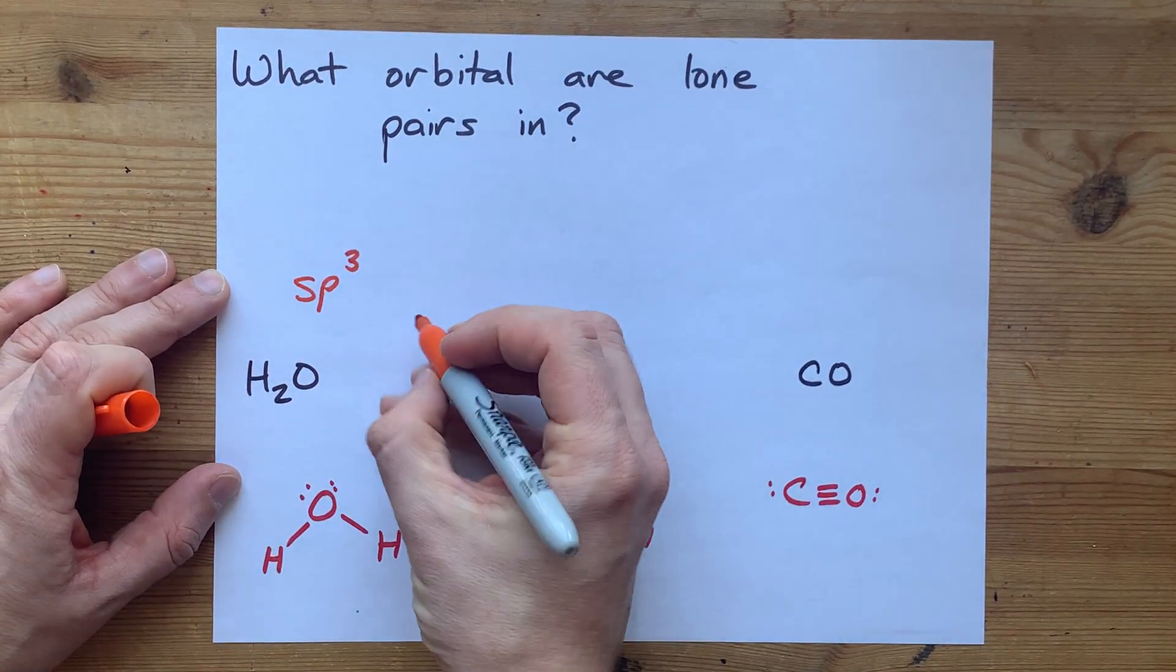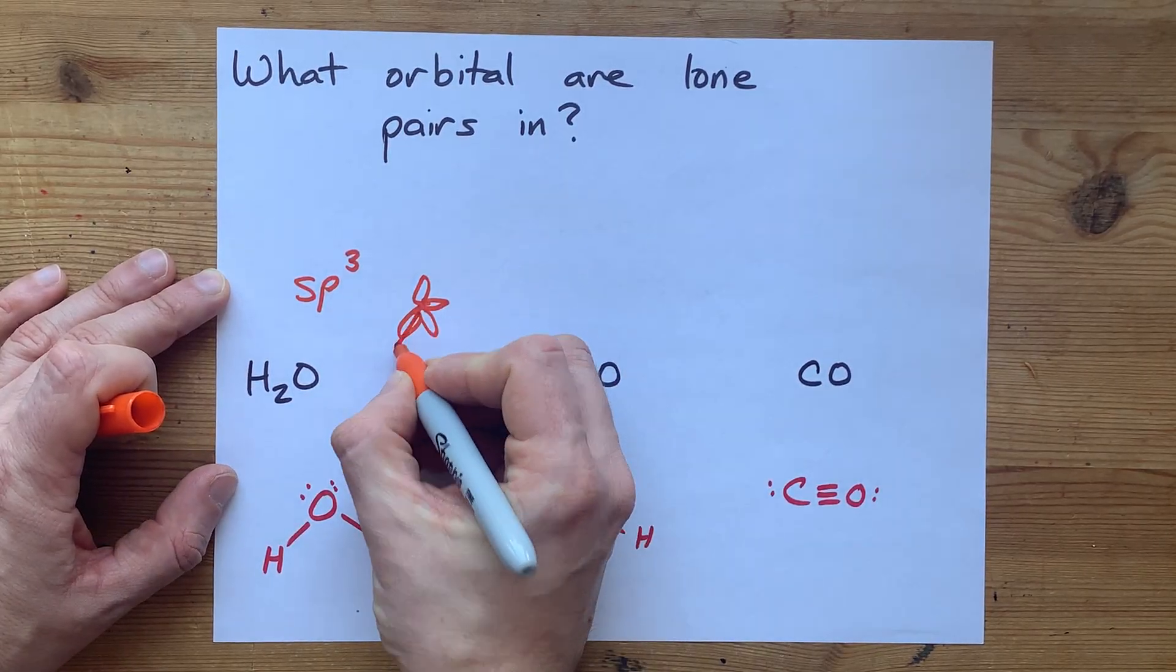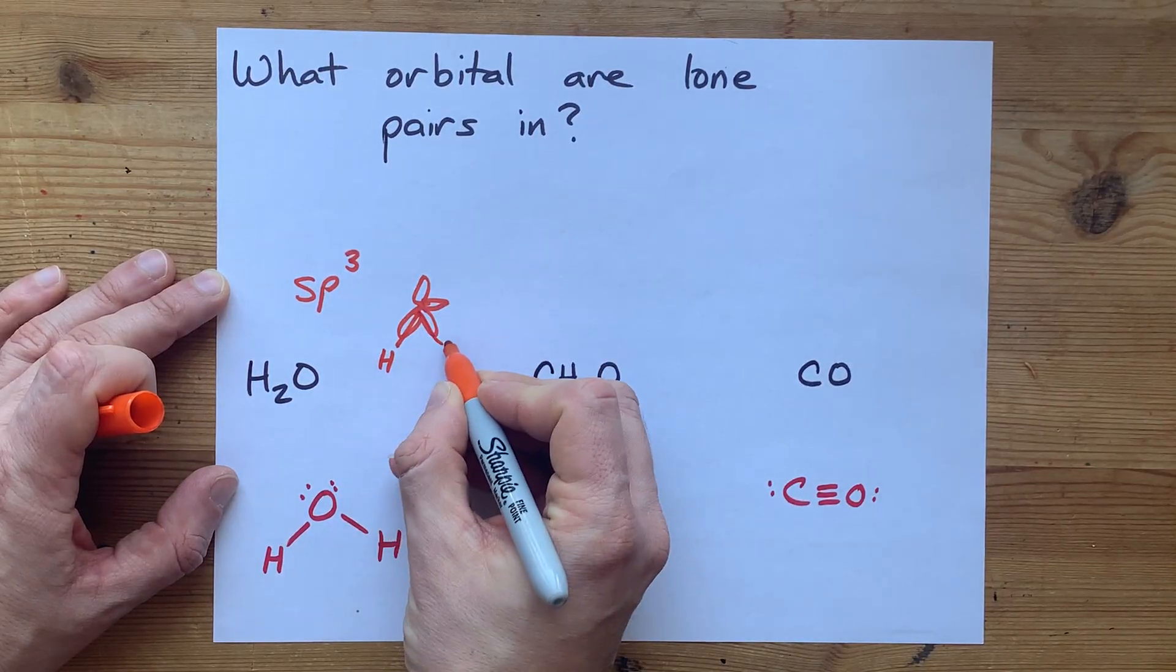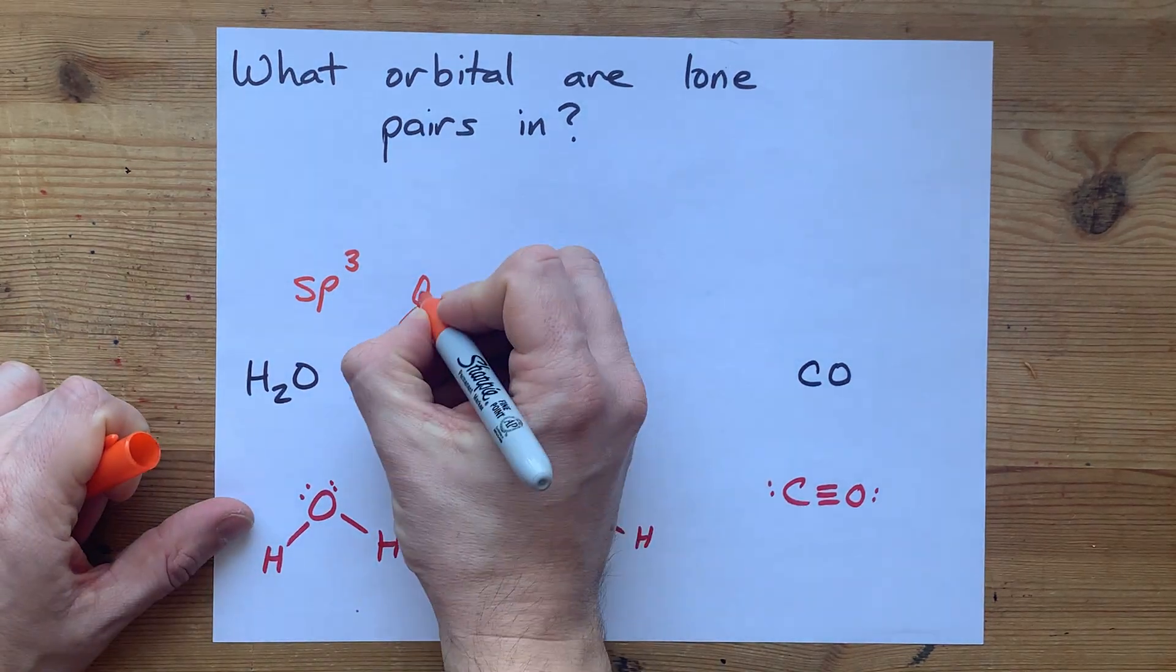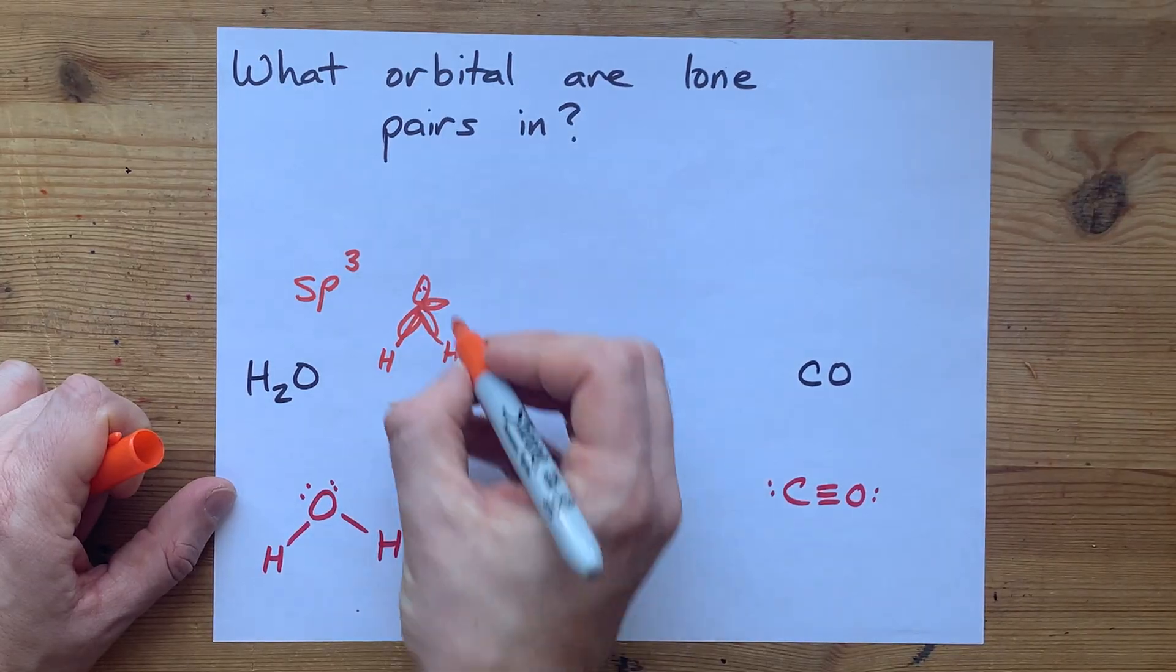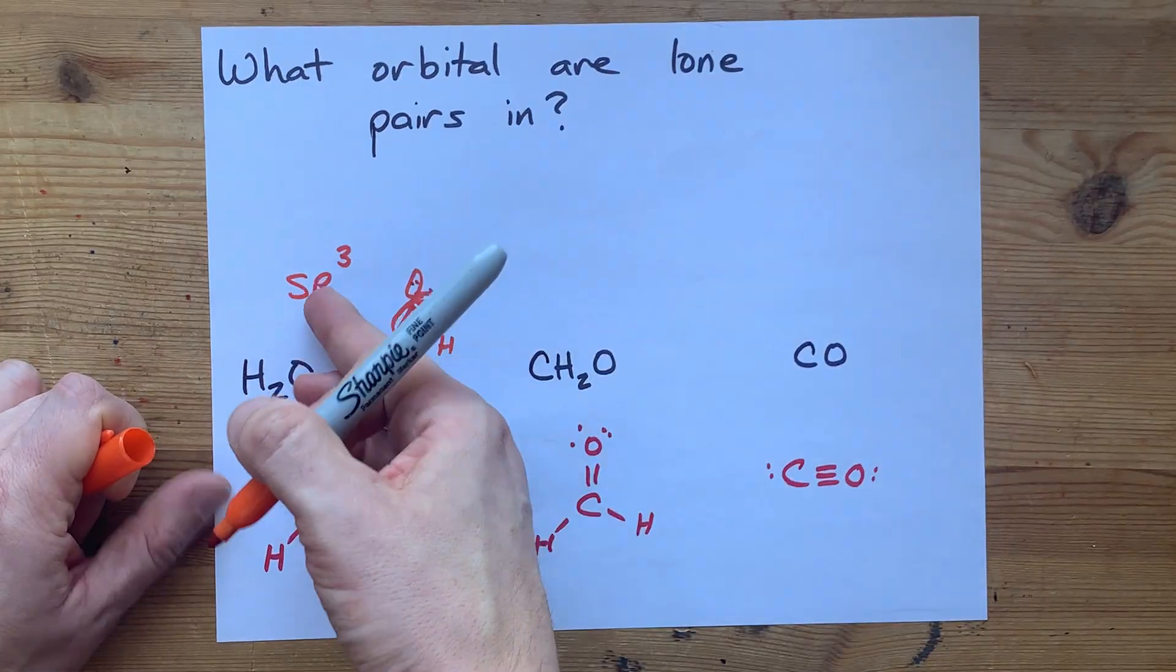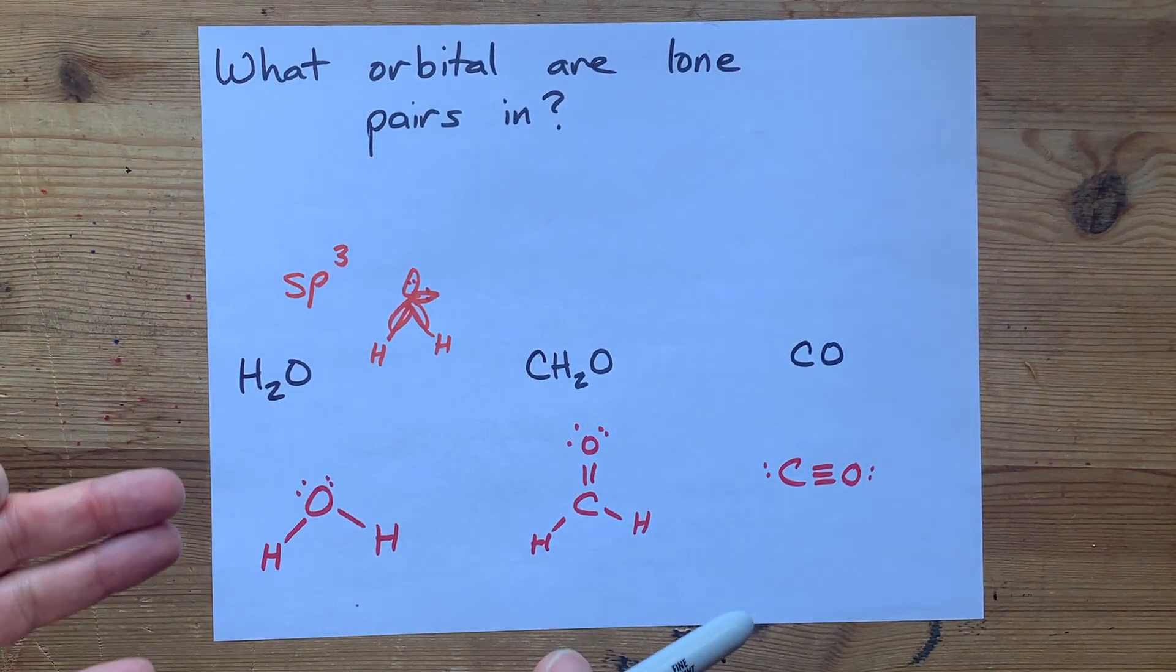sp3 hybrid orbitals are arranged tetrahedrally in space, and one of those is going to be to a hydrogen, another one's going to be to another hydrogen, that's why water is a bent molecule. Then one of them is going to have a lone pair inside of it, and the other one's going to have a lone pair inside of it. The lone pairs are in the hybridized orbitals, not the unhybridized orbitals.